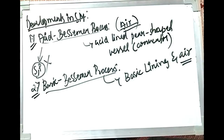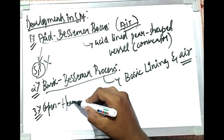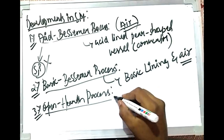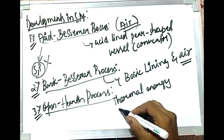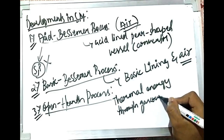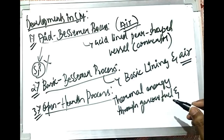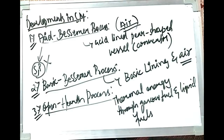The next development is the open hearth process. In this process there is some amount of thermal energy supplied through gaseous or liquid fuels — similar to how coke provides energy in the blast furnace. These fuels provide thermal energy so that the refining reactions take place. These were the three historically developed processes.